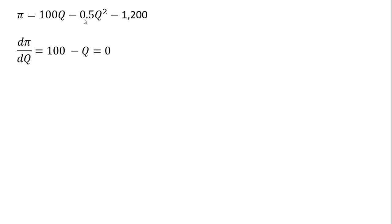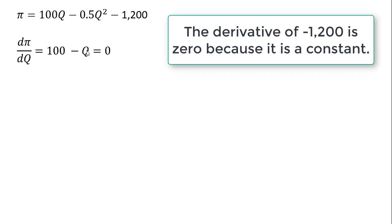I bring this two down in front, so two times 0.5 is just one. We've got the minus in front here, so it's just minus one. And then the exponent here, two minus one on the exponent, just leaves Q raised to the power of one. We'll just write it as Q.